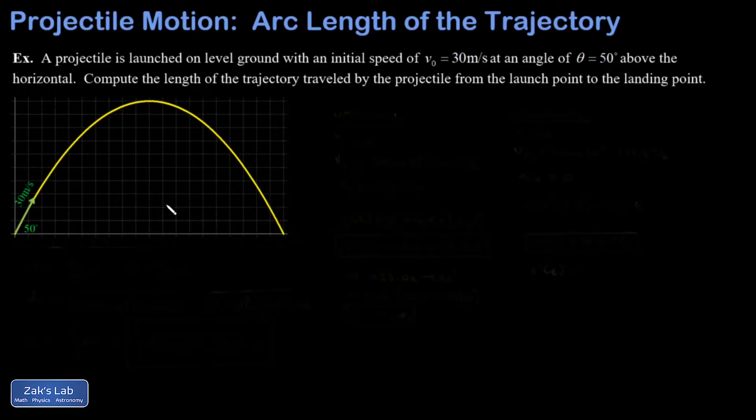So we're going to start by finding equations for the x and y coordinate as functions of time. Then we need to find out the landing time, because that determines the length of the curve. And then we need to figure out exactly how do we set up an integral to figure out the arc length of this curve.